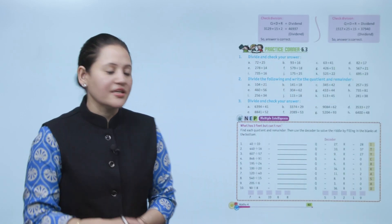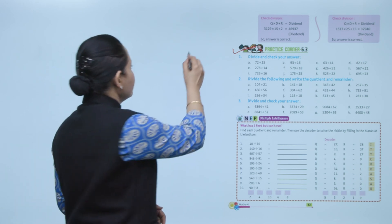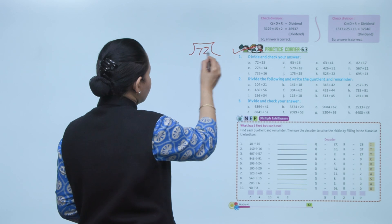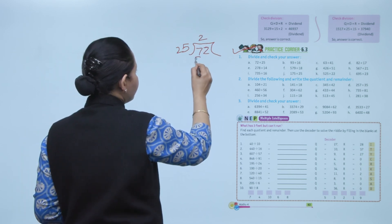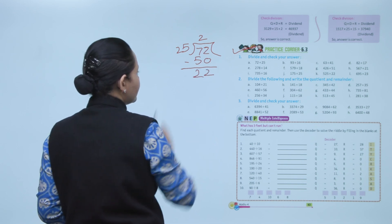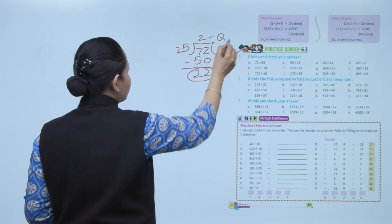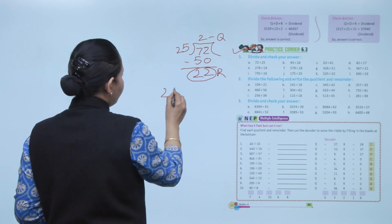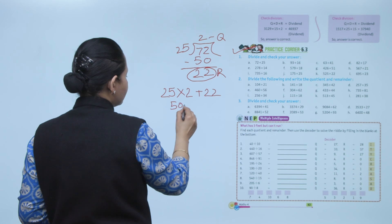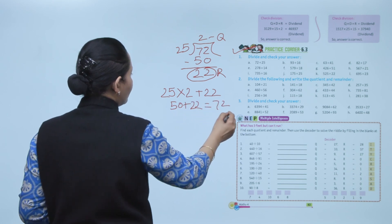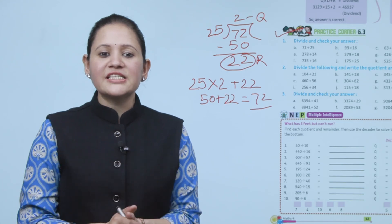Practice corner 6.3: divide and check your answer. For 72 ÷ 25: subtract 50 (25 × 2), remainder 22. 22 is less than 25 and no more digits remain, so 22 is the remainder and 2 is the quotient. Check: 25 × 2 + 22 = 50 + 22 = 72, which equals our dividend. Correct. Practice all the questions of this exercise.